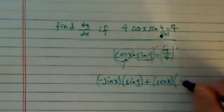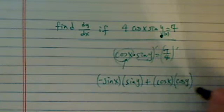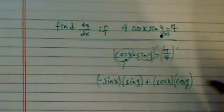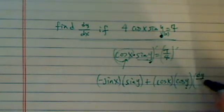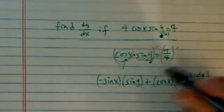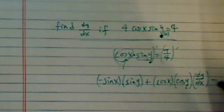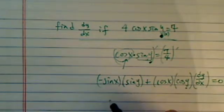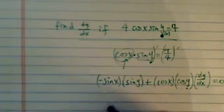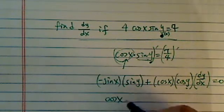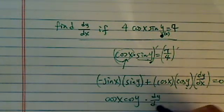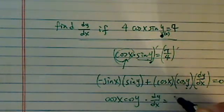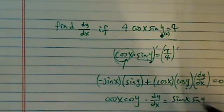Now here comes the trick. The derivative of sine of y is cosine of y, but we're not done yet. Remember, y has a dot on the bottom, so you attach dy/dx — treated as a function of x — equal to 0. Let's move it over. So we have cosine of x times cosine of y times dy/dx is equal to sine x times sine y.